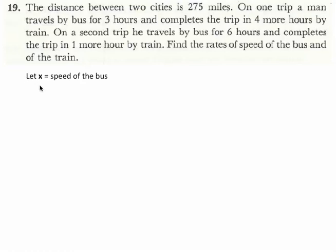So I'm saying let X be the speed of the bus and let Y be the speed of the train. We know that the speed of the bus times the number of hours on the bus added to the speed of the train times the number of hours on the train will give us the 275 miles, right? We know that velocity times time is distance.